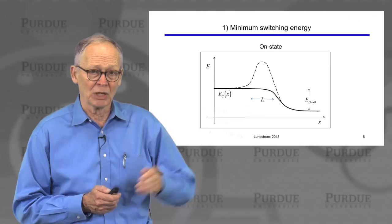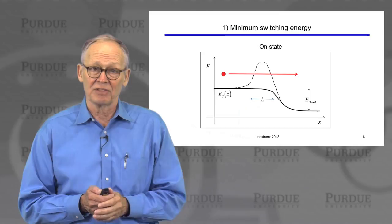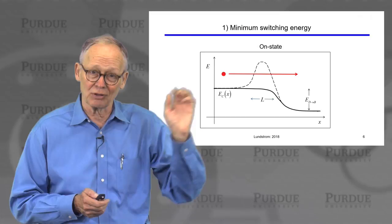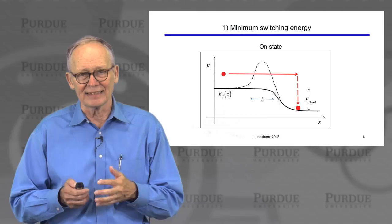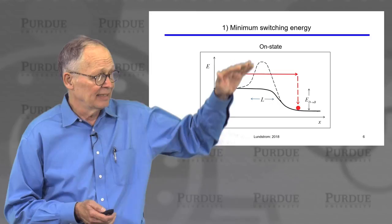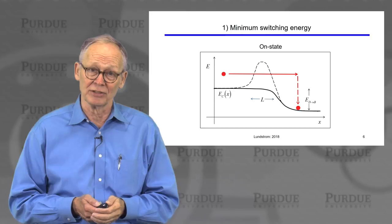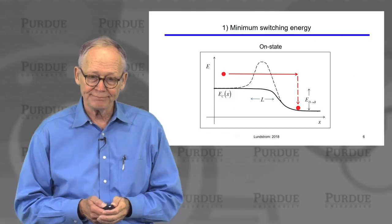We have an energy band diagram where we have applied a large gate voltage, pushing the energy barrier down. Electrons with thermal energy in the source flow across the barrier — there is no barrier. They flow across the channel into the drain, and then they dissipate that energy through various inelastic scattering processes. There's no current flowing in the gate, so in principle it doesn't take any energy to push the barrier down. It only takes the energy that we dissipate in the drain.